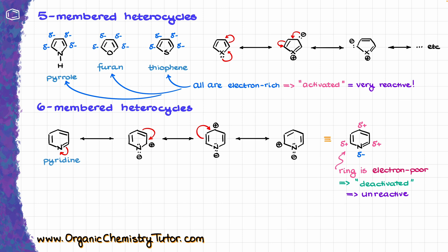So remember: 5-membered rings are very reactive in electrophilic aromatic substitution reactions, while 6-membered heterocycles are unreactive in those reactions — unreactive to the point where pyridine can be used as a solvent in typical electrophilic aromatic substitutions, and we're not going to be scared that it is going to mess up our reaction. That's how unreactive they typically are.